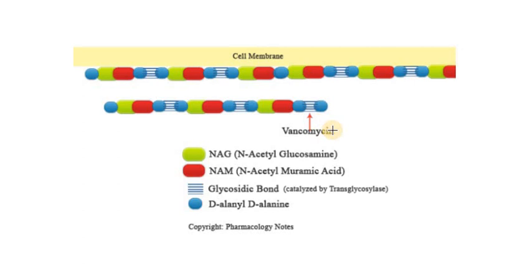When we give vancomycin, it inhibits this bond. When this bond is inhibited, this unit is not able to bind with another unit. So there is disruption of the cell wall. In this sense, the cell wall becomes weak or irregular, and the molecules that are present inside the cell leak outside, thereby preventing the cell wall synthesis or destroying the cell wall by inhibiting the elongation or polymerization process. I hope this makes sense. This is the easiest way I can make you understand.